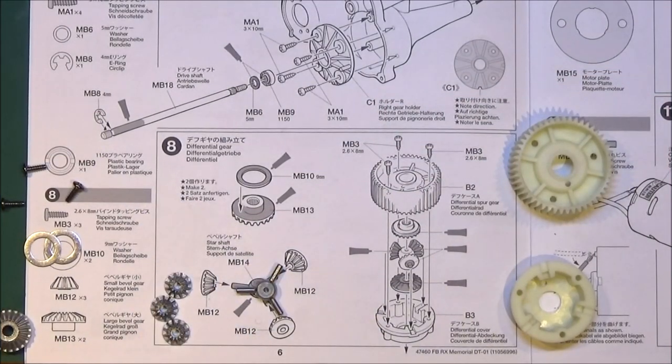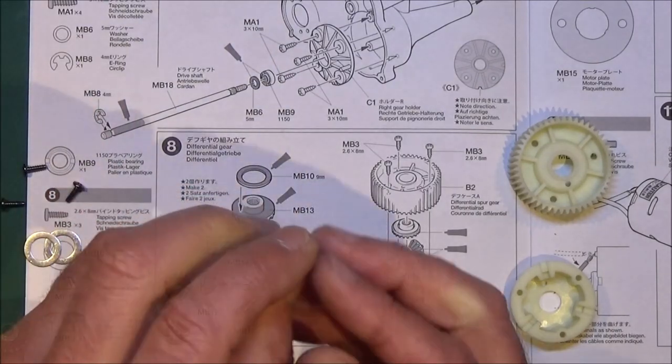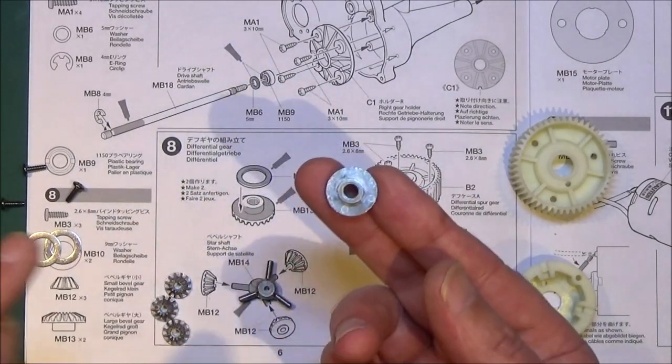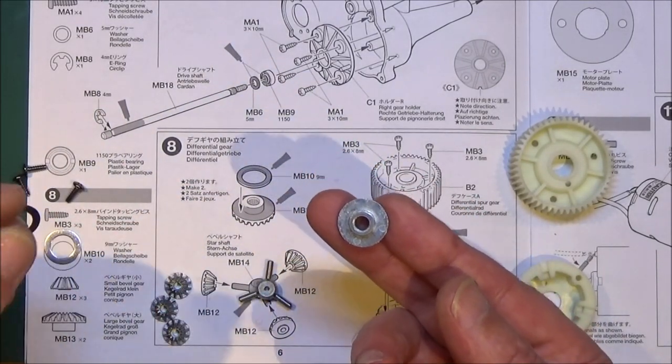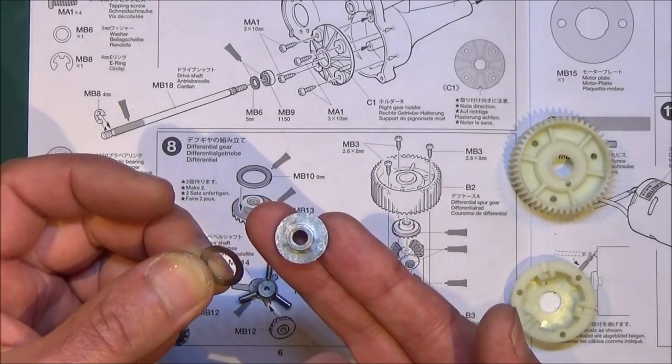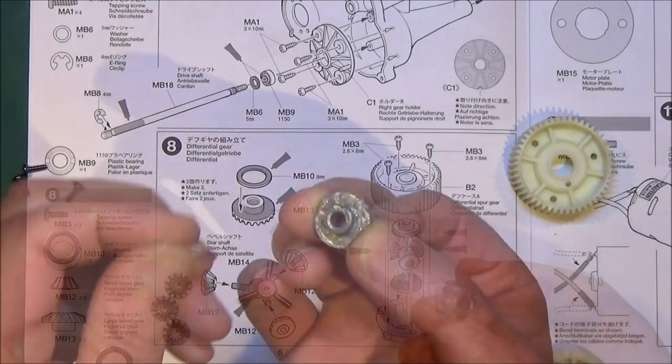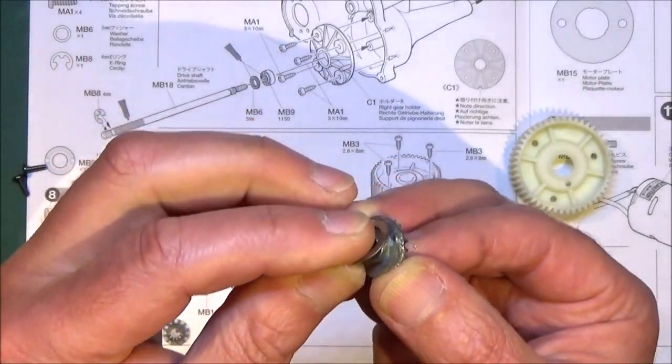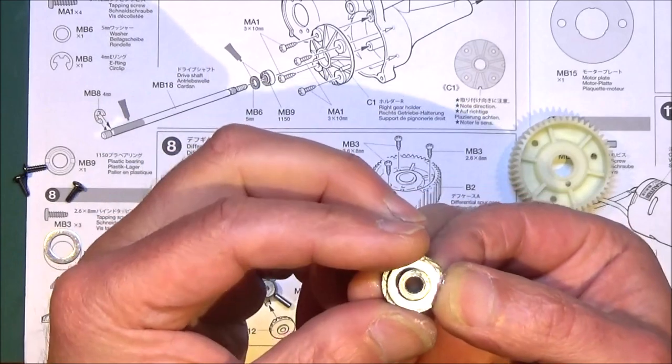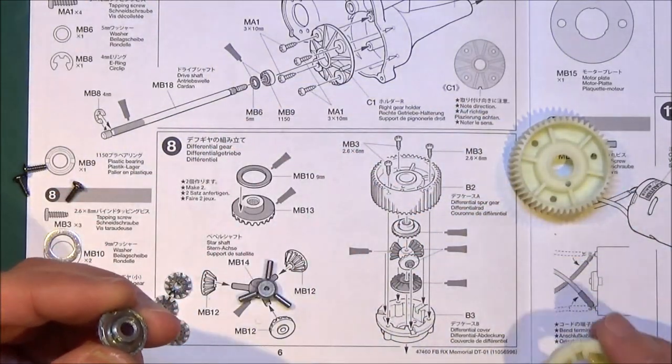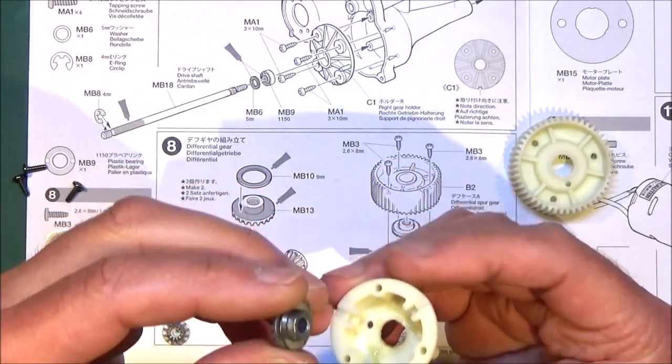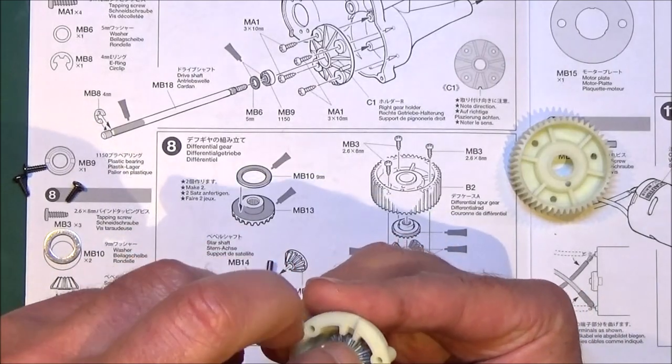Step 8 is making up your differential gear, so you're going to need to get your grease out now. First thing you're going to do is get your larger bevel gear, get some grease on this, and then get your 9mm washer that goes over there. Get some grease on all of that first. Get greasy, get your washer on, and then you want to drop that into the bottom of your differential cover like that.